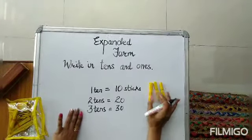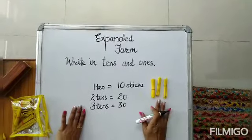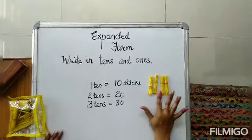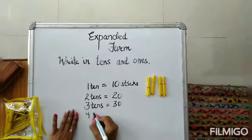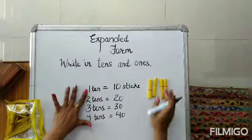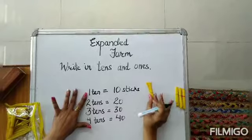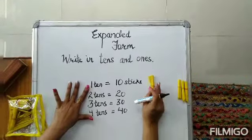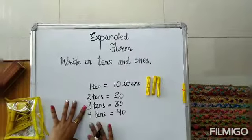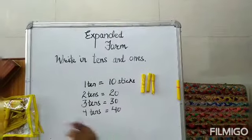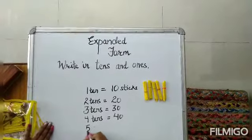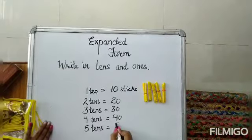If I open them and count them, that means 30. Now if I say 4 tens — 1, 2, 3, 4 — 4 tens means 40. It means 40. It's very simple. 1 ten means 10 sticks. 2 tens means 20. 3 tens means 30. And 4 tens means 40. If I say 5 tens, that means 50.